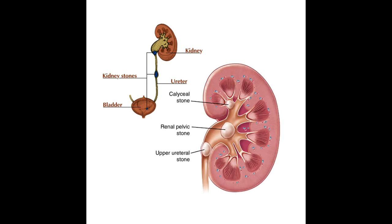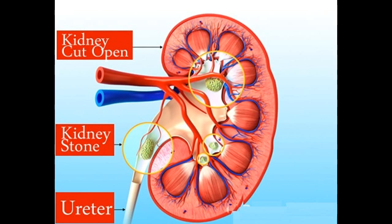In cystinuria, too much of the amino acid cysteine, which does not dissolve in urine, is voided, leading to the formation of stones made of cysteine. In patients with hyperoxaluria, the body produces too much oxalate, a salt. When the urine contains more oxalate than can be dissolved, the crystals settle out and form stones. Hypercalciuria is inherited and may be the cause of stones in more than half of patients. Calcium is absorbed from food in excess and lost into the urine, causing crystals of calcium oxalate or calcium phosphate to form in the kidneys or elsewhere in the urinary tract.